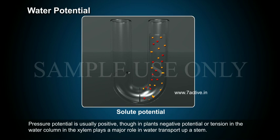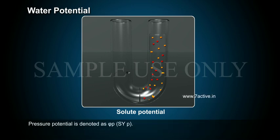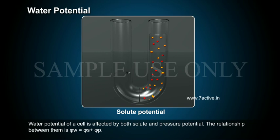Pressure potential is usually positive, though in plants, negative potential or tension in the water column in the xylem plays a major role in water transport up a stem. Pressure potential is denoted as Psi P. Water potential of a cell is affected by both solute and pressure potential, and the relationship between them is: Psi W = Psi S + Psi P.